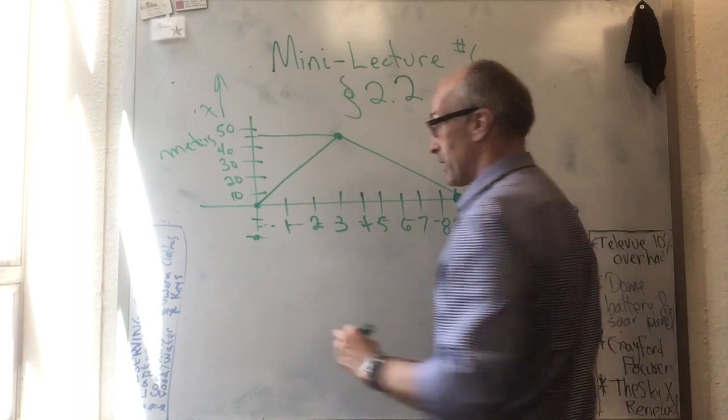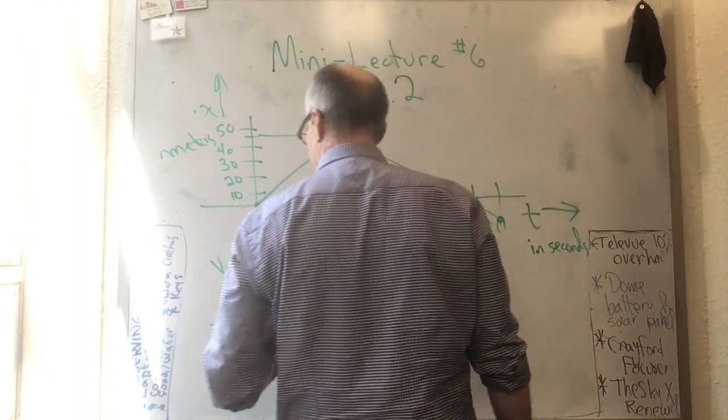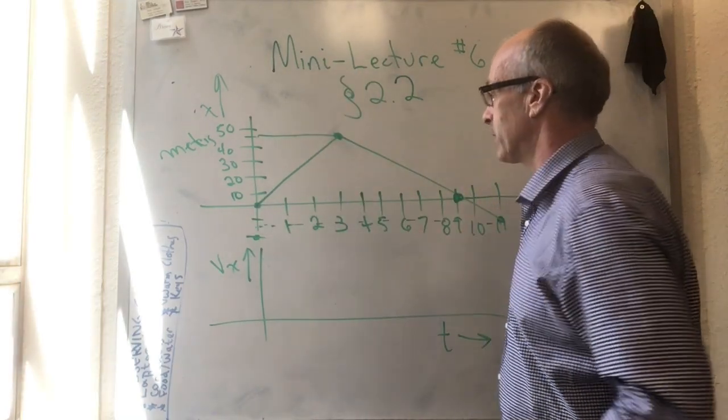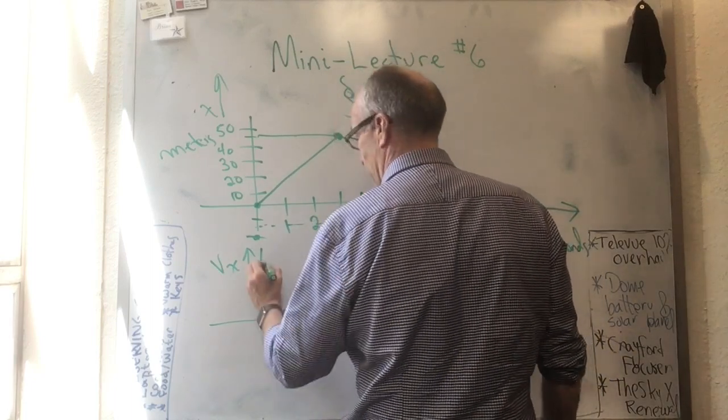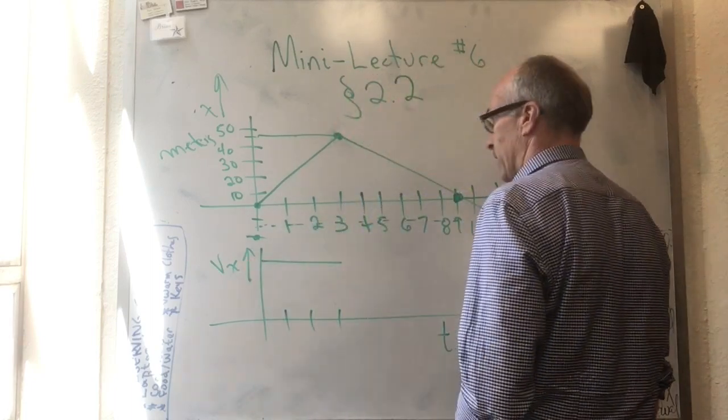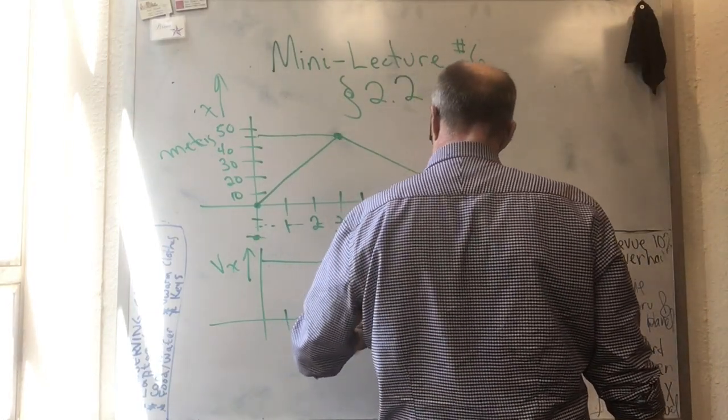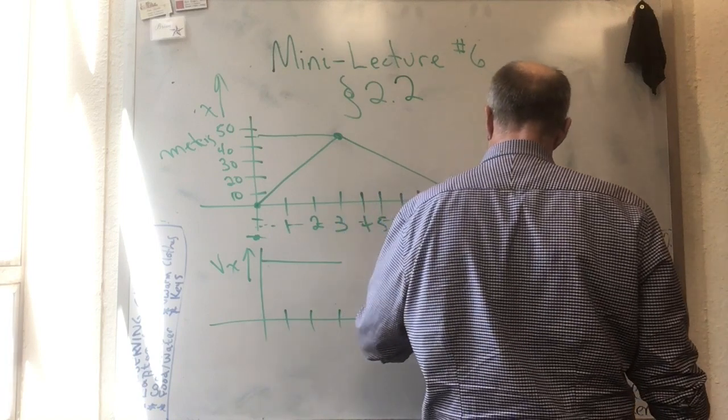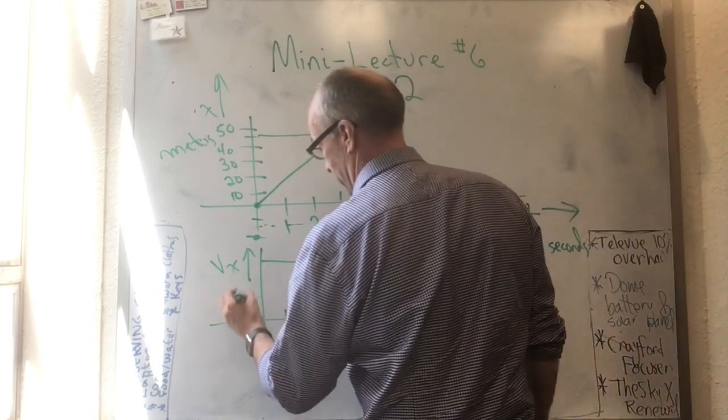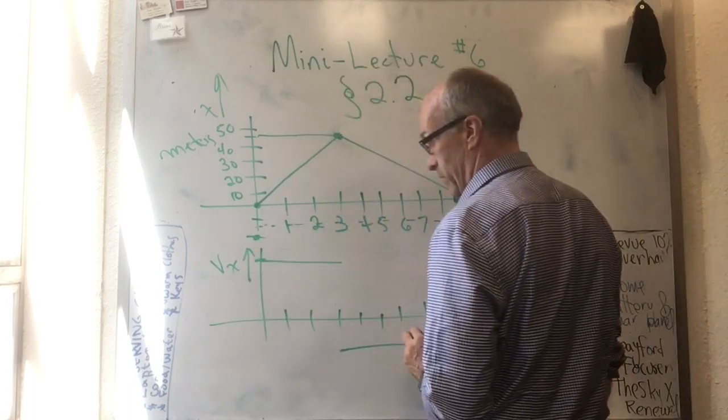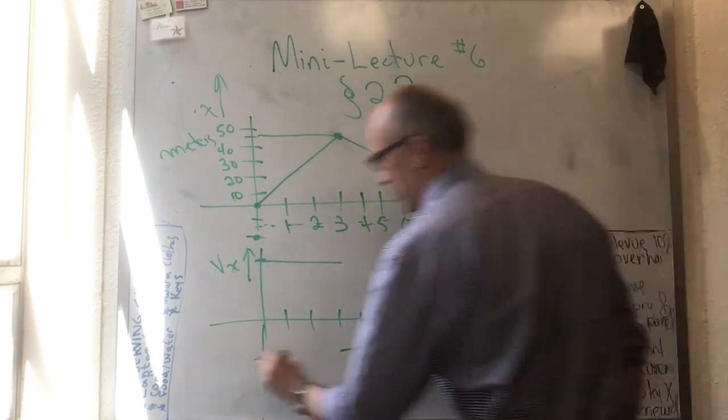Now the cool thing is that you can get vx as a function of t pretty easily, because vx is just the slope of x. And the slope of x here was 15 meters per second. So for that 1, 2, 3, we're up here at 15 meters per second. And then the slope is minus 7.5 meters per second. So for the next eight seconds, we're at minus 7.5 meters per second.